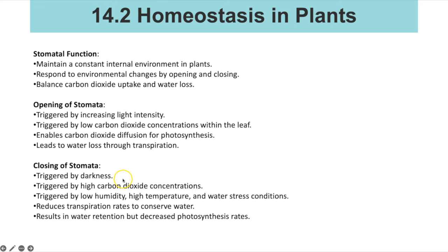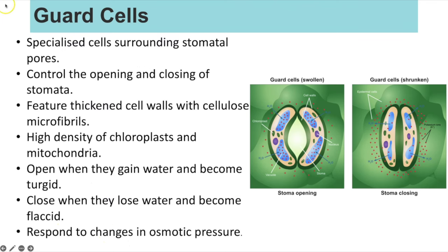Stomata will close in darker conditions, triggered by high carbon dioxide concentrations in the plant, low humidity, and high temperature, to reduce water loss under water stress conditions. When stomata close, transpiration is reduced and water is conserved. The guard cells are the cells that bend and change shape to create the stomatal opening. They have thickened cell walls with cellulose fibers, a high density of chloroplasts and mitochondria, and open when they gain water and become turgid — bending to create the opening.